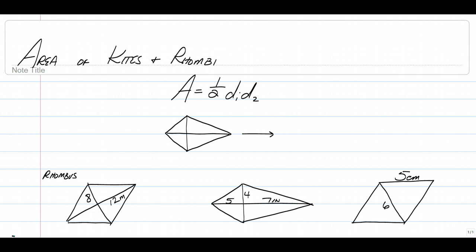So a rhombus, remember, it also has the base times height because it is a parallelogram, but due to the fact that it has perpendicular diagonals just like a kite, it can also use that same formula. So half diagonal one times diagonal two.